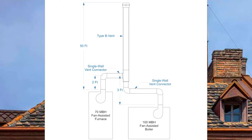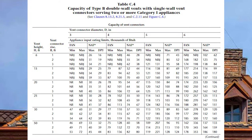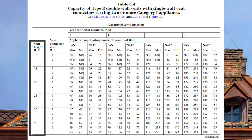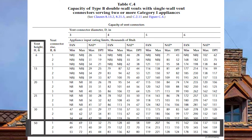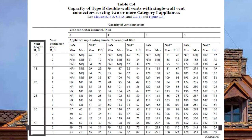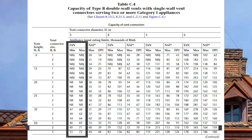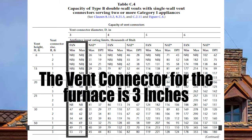Turning to page 204 in the gas code to table C4, I come down on the left-hand side for a vent height of 50 feet and start with the fan assisted furnace which has a vent connector rise of two feet. A three-inch vent connector fan min-max is good between 49,000 and 71,000 BTUs — perfect for our furnace. So we will have a three-inch vent connector serving the furnace.